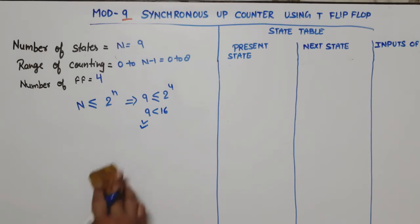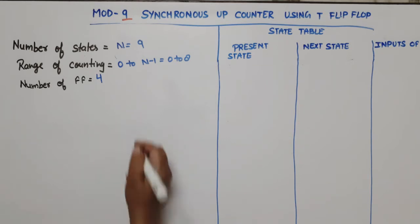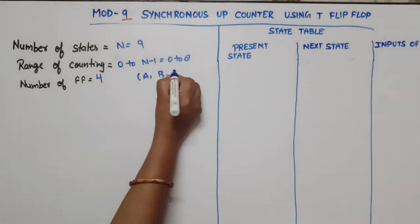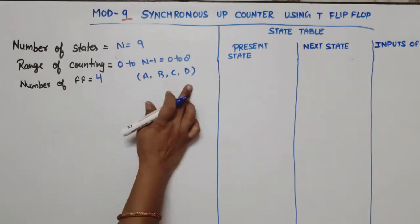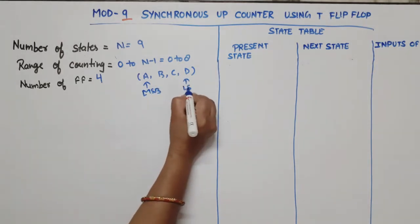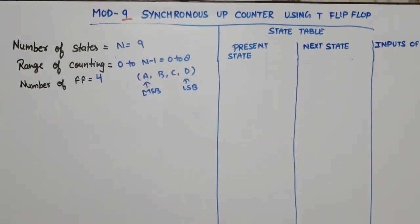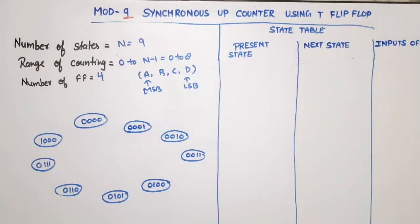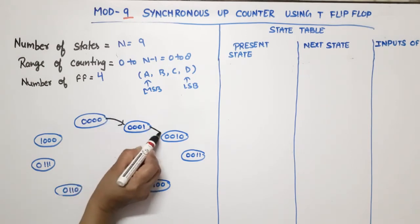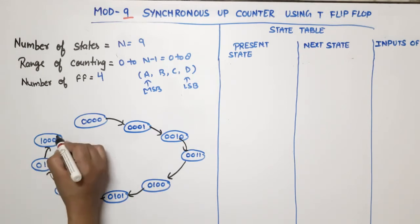Now we assign names to the flip-flops. You can use Q0, Q1 or anything, but mostly we use A, B, C, and D. Flip-flop D is the MSB bit and flip-flop A is the LSB bit. The counter will count states 0 to 8 in binary: 0 to 1, 1 to 2, 2 to 3, 3 to 4, 4 to 5, 5 to 6, 6 to 7, 7 to 8, and 8 back to 0.